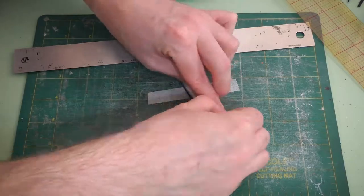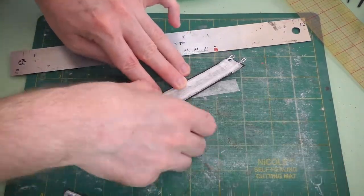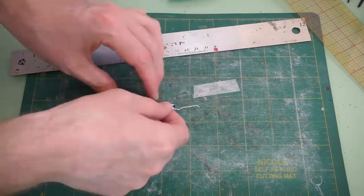As I'm working, you might notice the somewhat large loops that I left on the end of the armature wire. Those loops are going to allow us to make an easy clasp that you'll see later.